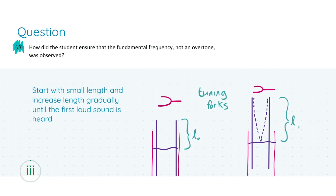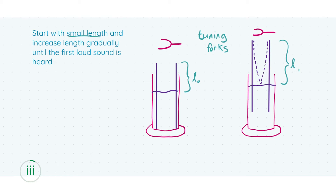In part three, we were asked how the student ensured that the fundamental frequency — and the key part here is 'not an overtone' — was observed. We're being asked how we make sure we're hearing the original frequency and not an integer multiple of it. I've drawn a little diagram to help explain this, because I always find this part of waves a little difficult to understand. On the right we have two tuning forks at the top — you strike these to create waves in the purple resonance tubes.